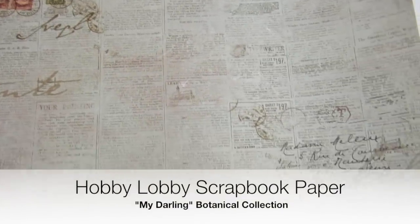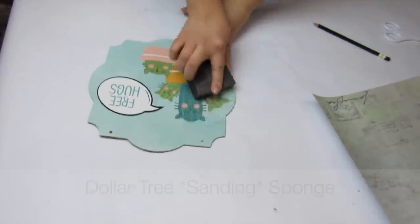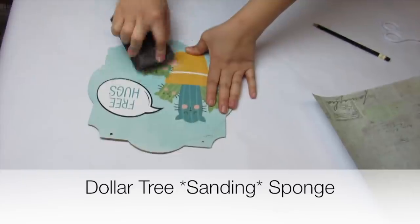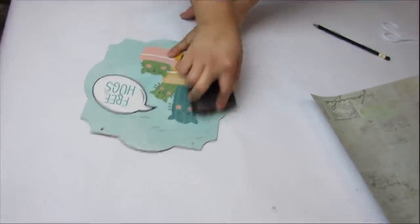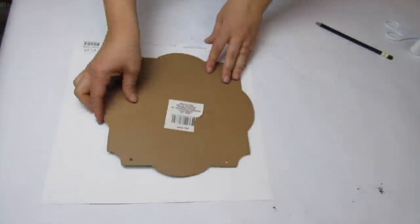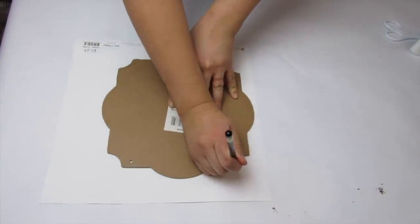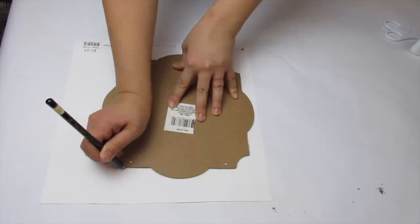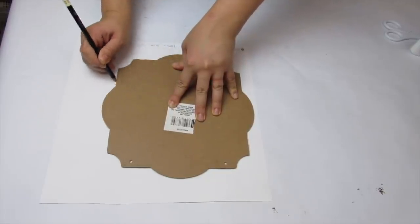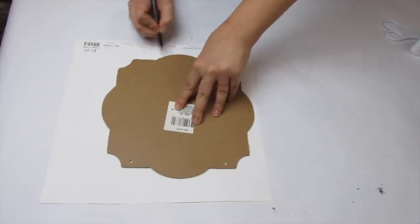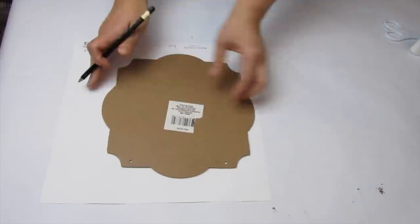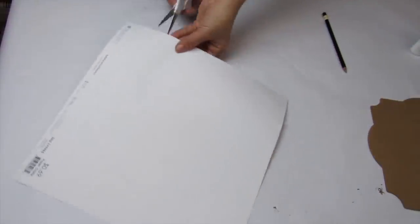I am going to sand down with a Dollar Tree sponge the sparkles on the picture just so that they don't look bumpy with the scrapbook paper on top. Really simple, you've seen me do this in so many of my projects. I love scrapbook paper, that is no surprise if you're not new here. Just trace the scrapbook paper and cut it out.